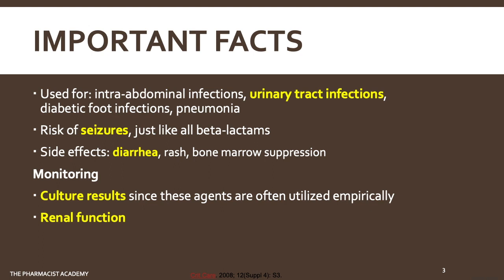In terms of monitoring, this is where the pharmacist's role really becomes important. As a pharmacist, you want to make sure you're constantly checking to see if the culture has resulted. We tend to use these agents as empiric therapy — even though we don't know which bacteria is causing the infection — because they have a broad range of coverage. Once results come back, you want to de-escalate: take the patient off the broad-spectrum antibiotic and put them on something more targeted. Doing this can reduce the risk of resistance. Keep in mind that if renal function is not great and they get the wrong dose, they have a higher chance of developing seizures.